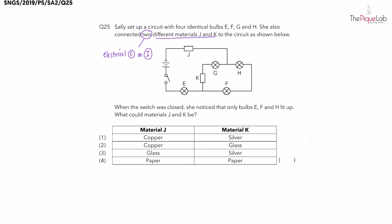When she closed the switch like this, she observed bulbs E, F and H lighting up. So let's begin by tracing the pathway that electricity needs to flow through, allowing these three bulbs E, F and H to light up.